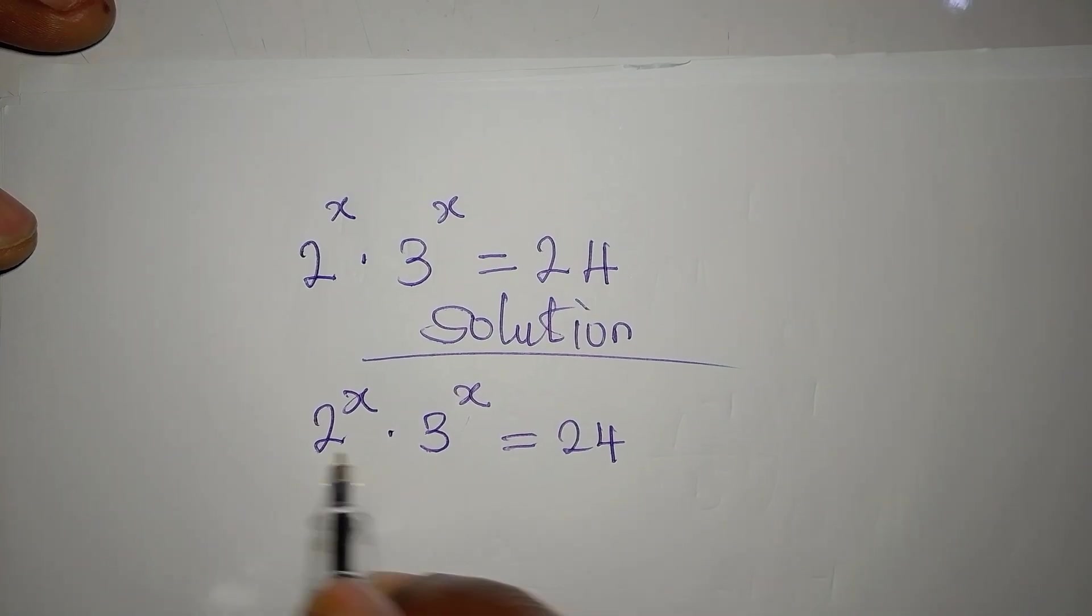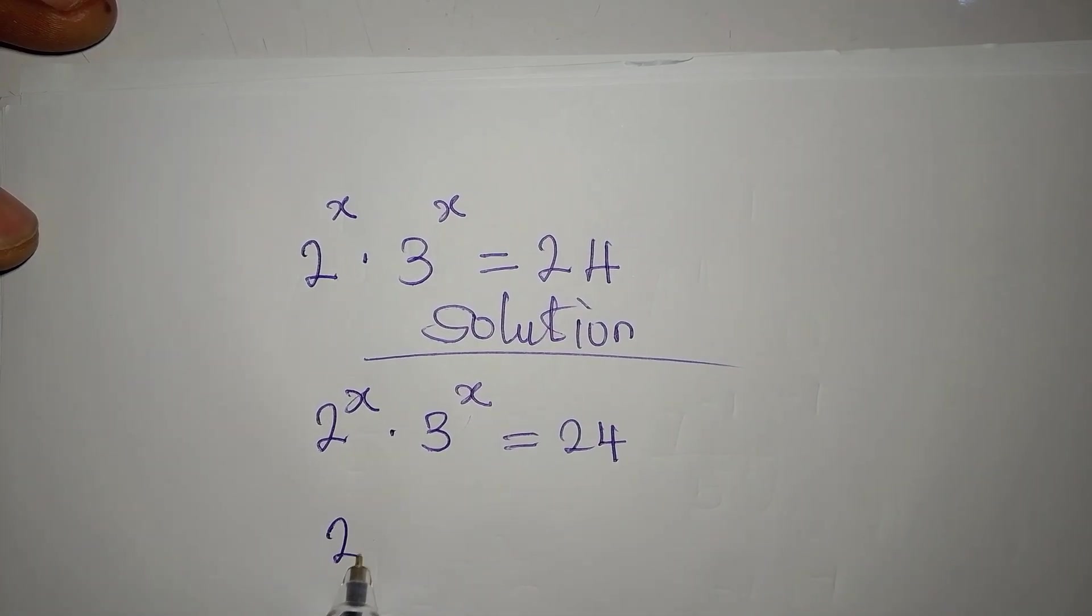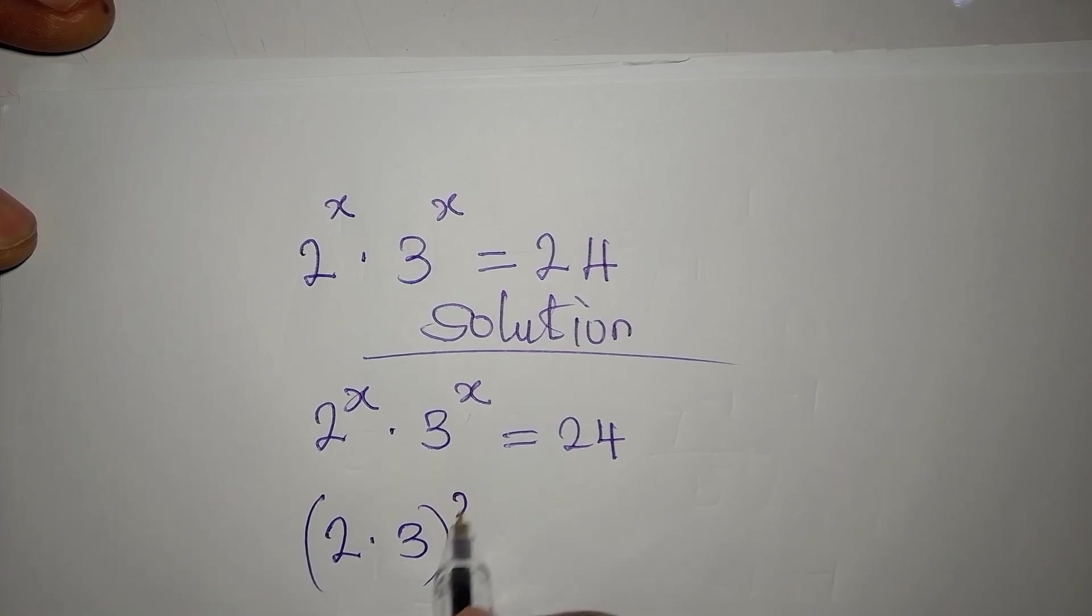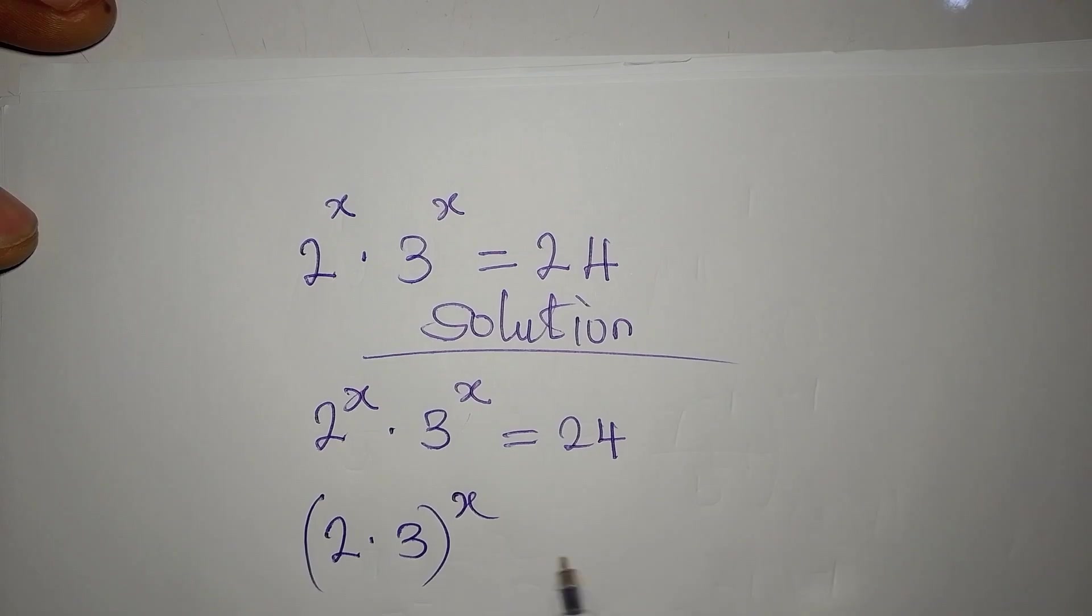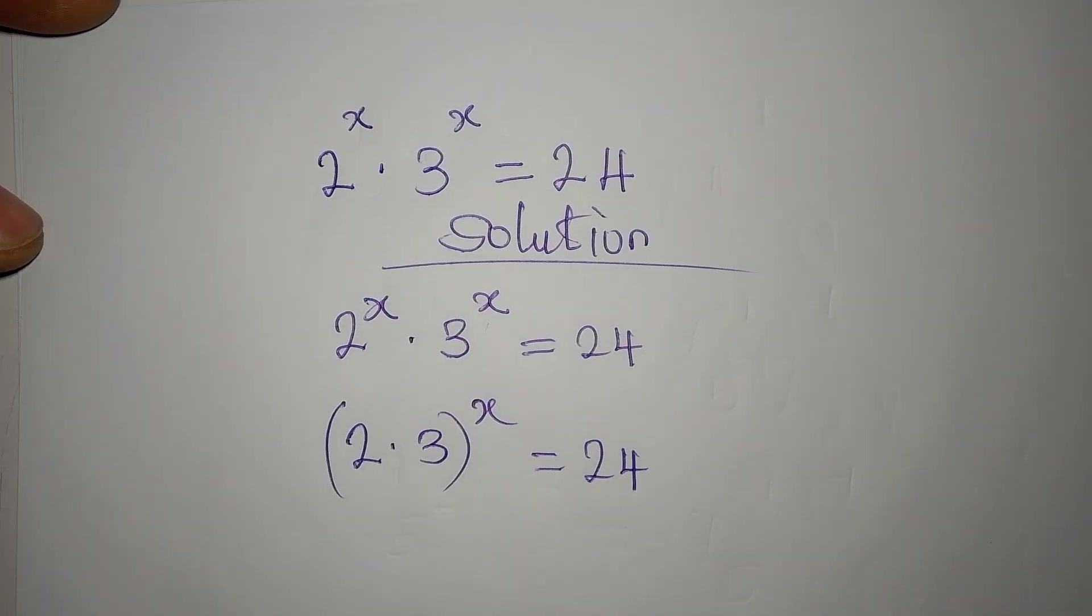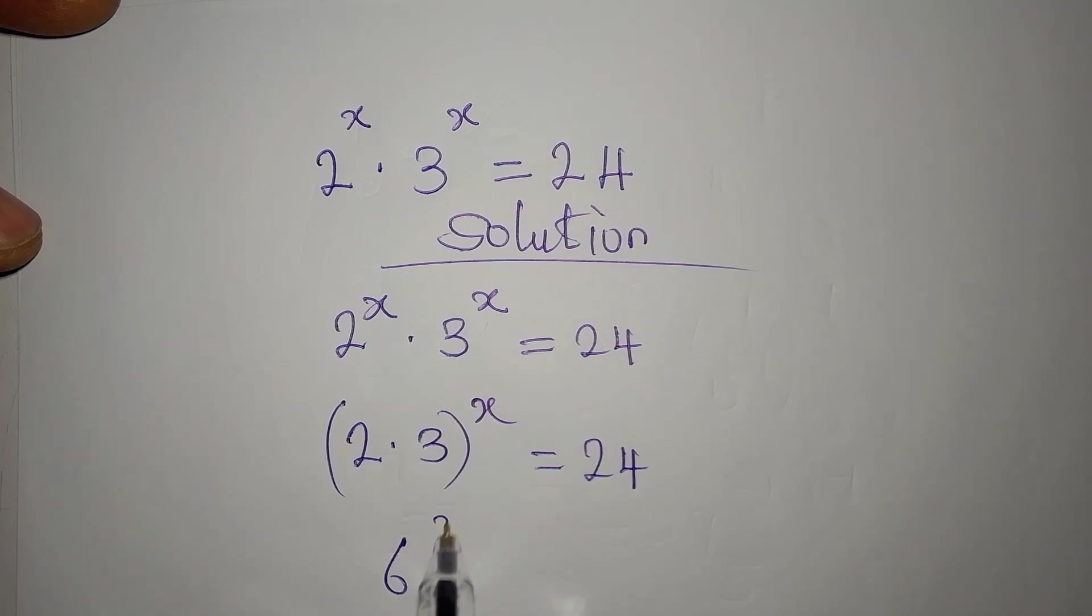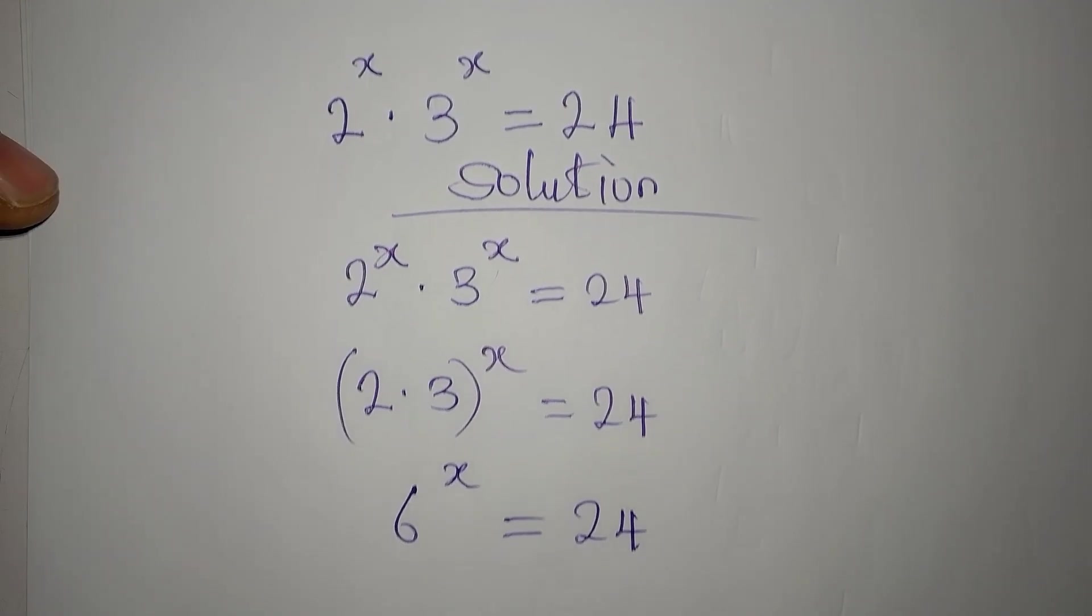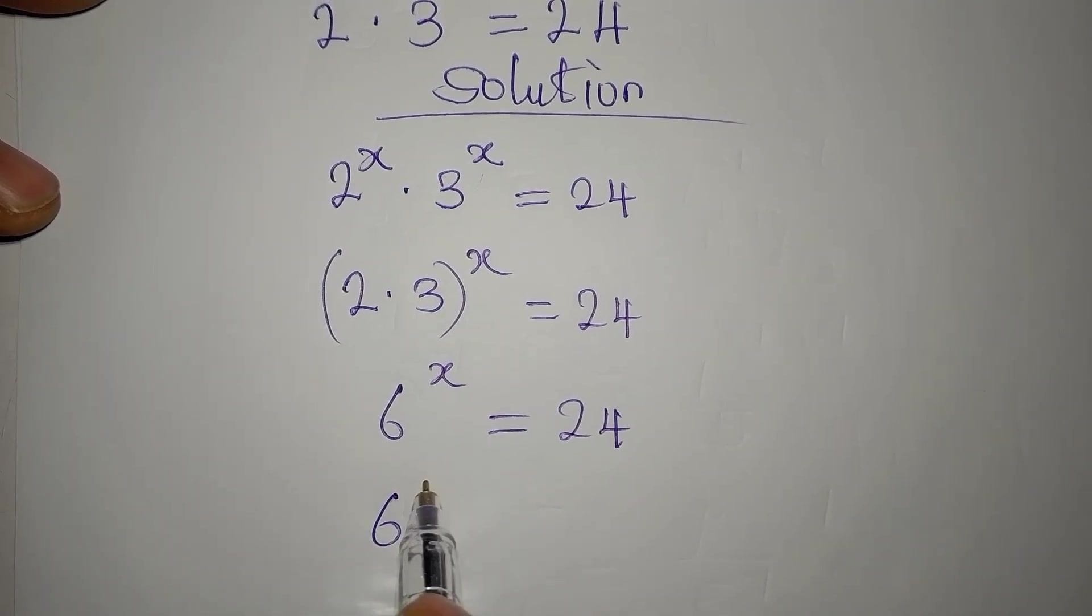Since the powers are the same, it equals 24. So 2 times 3 will give 6 to the power of x being equal to 24. And 6 to the power of x equals 24, which is 6 times 4.